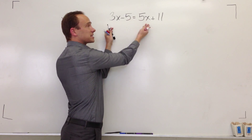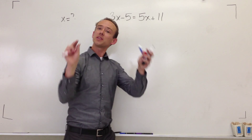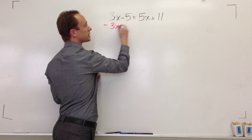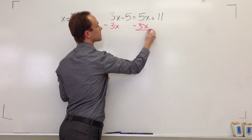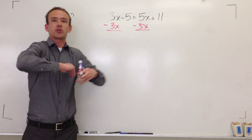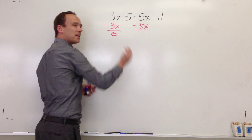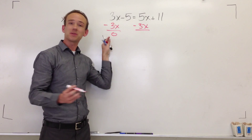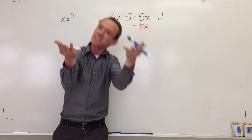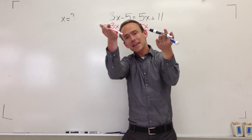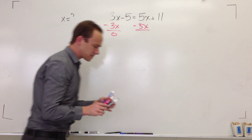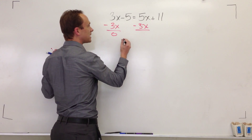Now, this is a 3x and a 5x. I'm always going to get rid of the smaller of the two, so because 3x is less than 5x, I'm going to get rid of the 3x. How do you get rid of a positive 3x? Just subtract it out — now it's gone. I did it to both sides of the equation, because it's an equation, meaning both sides are equal. If you take away 3x from one side, you've got to take it away from the other side too. Look what I've got left.